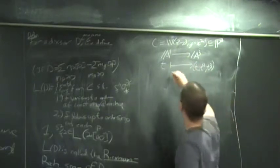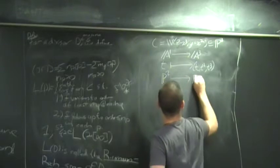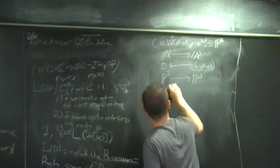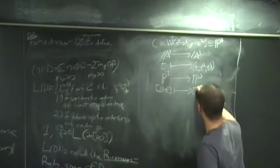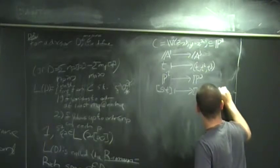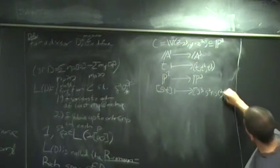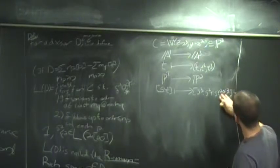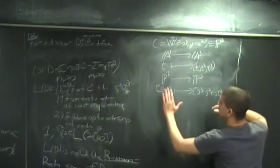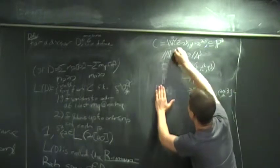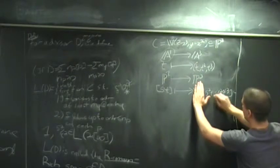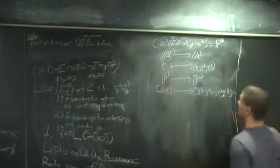Here's the map from A¹ to A³, which extends in a straightforward way to a map from P¹ to P³ that goes (S³ : S²T : ST² : T³). This is all the monomials of degree 3. When we scale S = 1, we're getting 1, T, T², T³ — so it really is an extension of the original map.